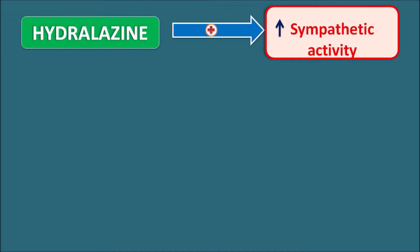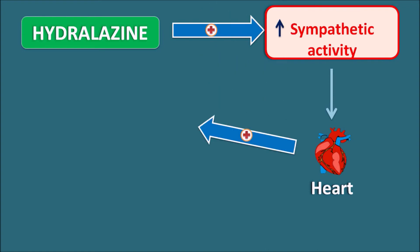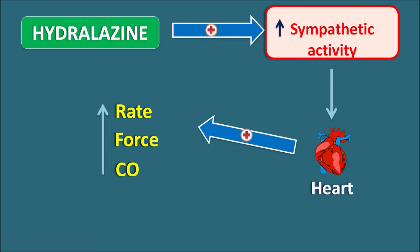When the sympathetic system is activated by hydralazine through reflex mechanism, norepinephrine and epinephrine are released, which act on the heart. This stimulates the heart, increasing both rate of contraction and force of contraction, which increases cardiac output. That's why hydralazine can increase cardiac output even though it acts as a vasodilator. This drug can also increase the rate of contraction of the heart, resulting in tachycardia as one important side effect.